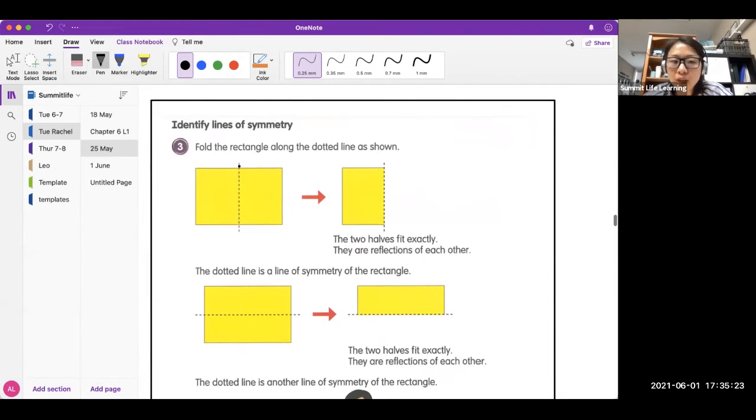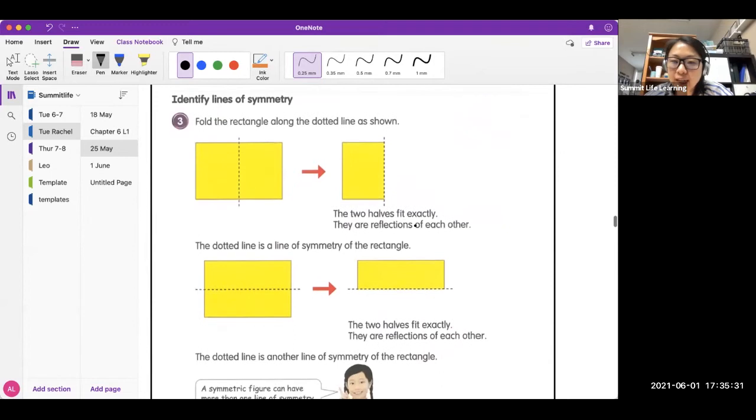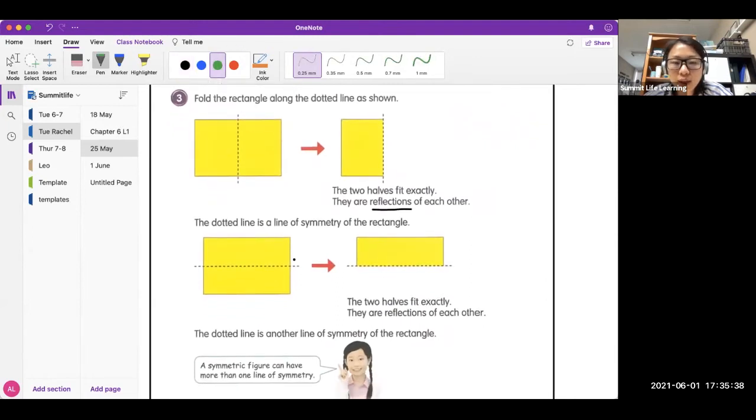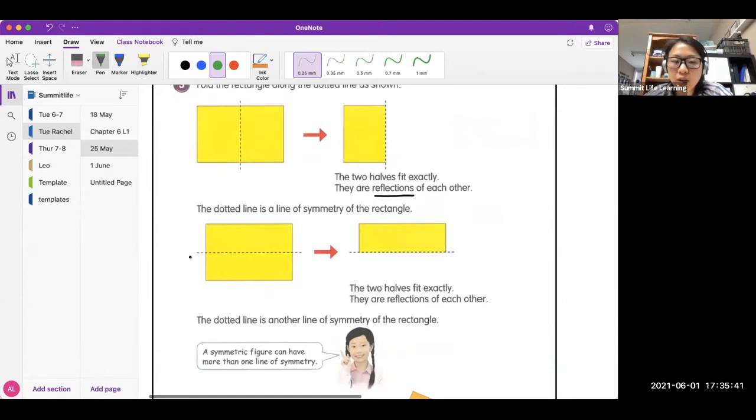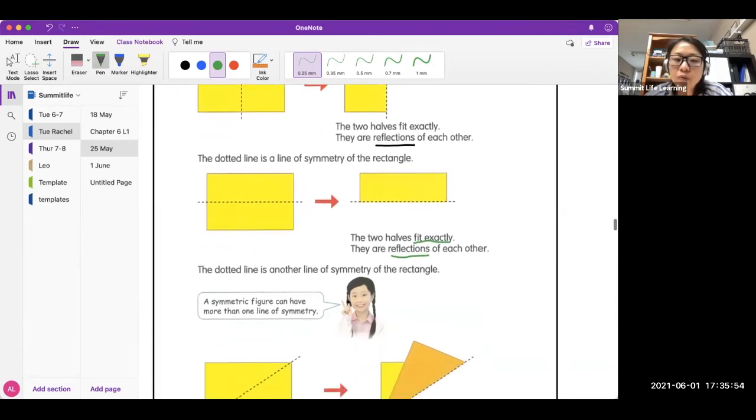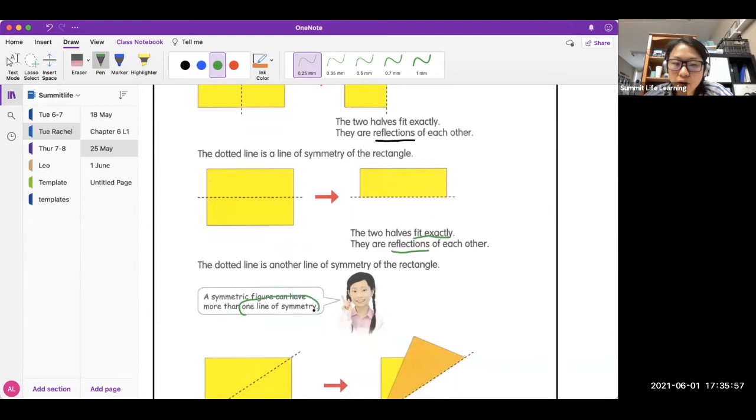So here is the rectangle. If we cut it at the middle vertically, we can overlap the left and right perfectly. It fits exactly into each other, so we say they are reflections of each other. If we cut the rectangle horizontally, we can also overlap it and they fit exactly. Similarly, they're reflections of each other. So you can see that for a rectangle, there are more than one line of symmetry.